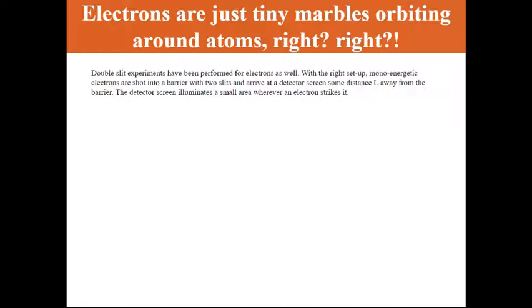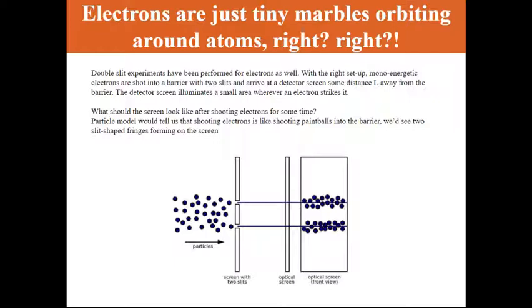And obviously, electrons are not light. You can't see them. But what you can do with the screen on the other side is that you can have these little pixels, little current detectors, so that wherever electrons strike, that will get marked on the screen. And so as you keep shooting electrons from your electron beam into the double slit, eventually you should see a pattern forming on the screen.